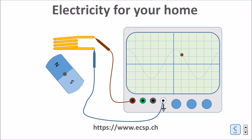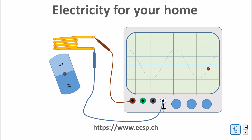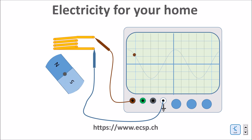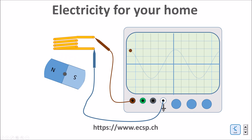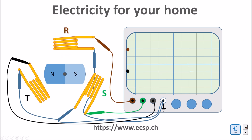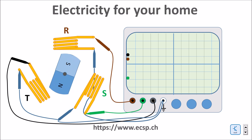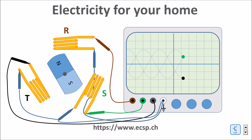Here I measure the voltage induced in the coil by means of an oscilloscope. To do so, I connect both ends of the coil to the measurement device. The blue wire is grounded. In order to better utilize the generator, three coils are mounted around the rotor, displaced by an angle of 120 degrees from each other.